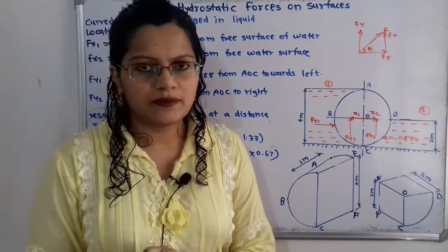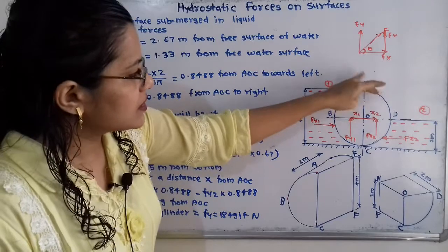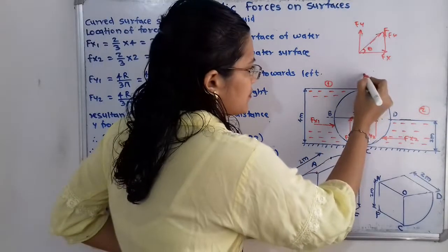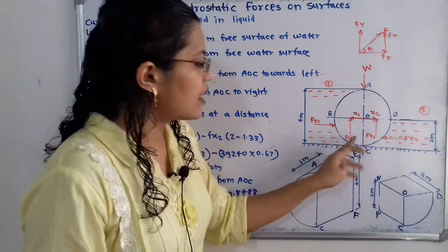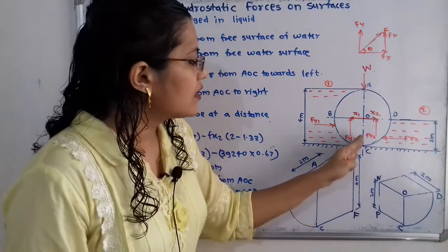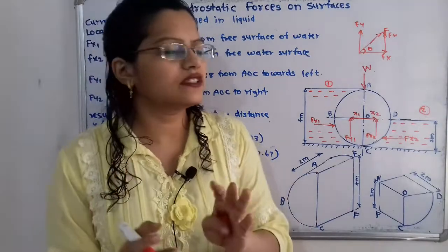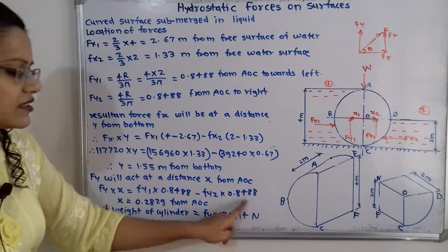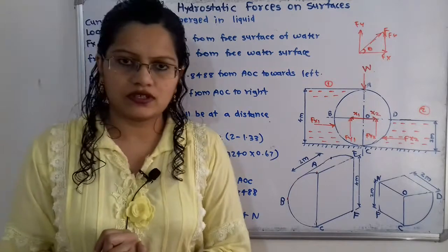Finally, for the least weight of the cylinder: the weight acts downward and must be balanced by the net vertical force component Fy = FY1 + FY2. Therefore the least weight of the cylinder equals Fy = 184,940 Newton. This is the final answer.